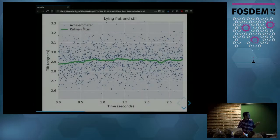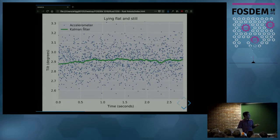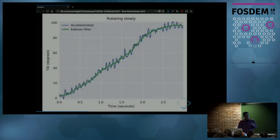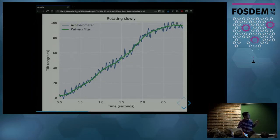Here is what the Kalman filter looks like in action. Again, this is data from the sensor horizontal without moving. The blue dots are the tilt angle computed only using accelerometer data, and the green line is the Kalman filter. Both say the angle is around 2.9 degrees, but the Kalman filter has much less noise — about one order of magnitude less. In another example where I move the sensor from zero to 90 degrees, the Kalman filter shows a smooth transition while the accelerometer has oscillations throughout.